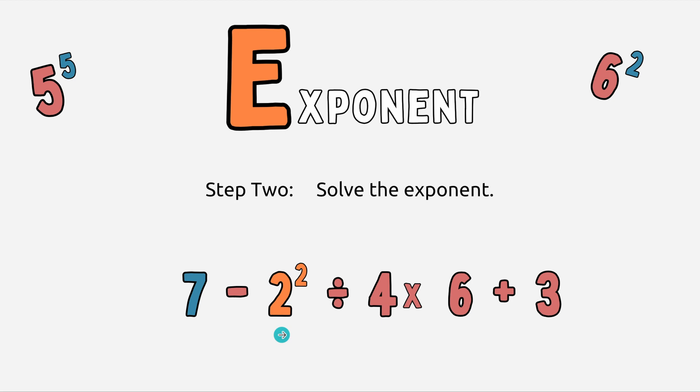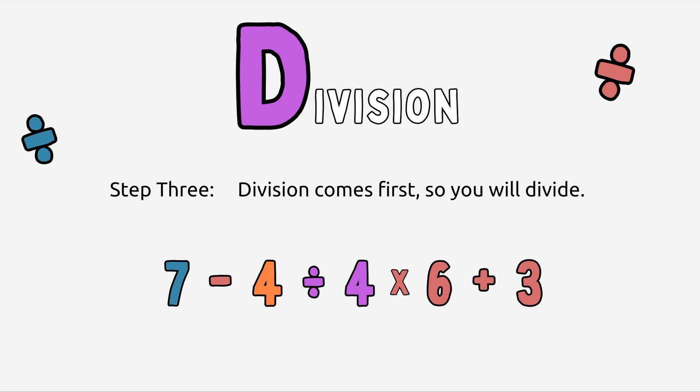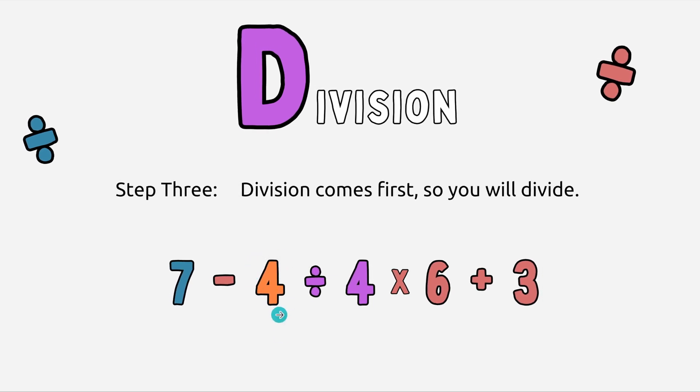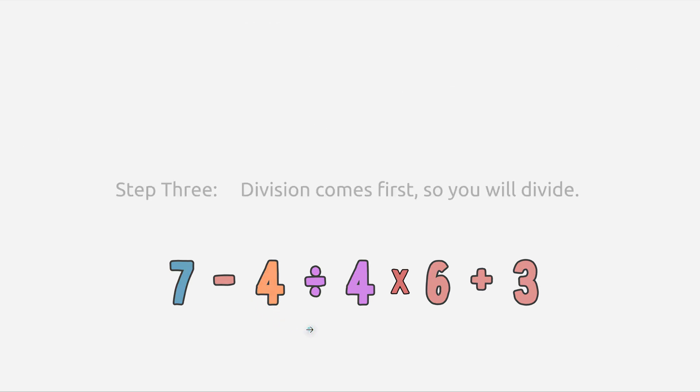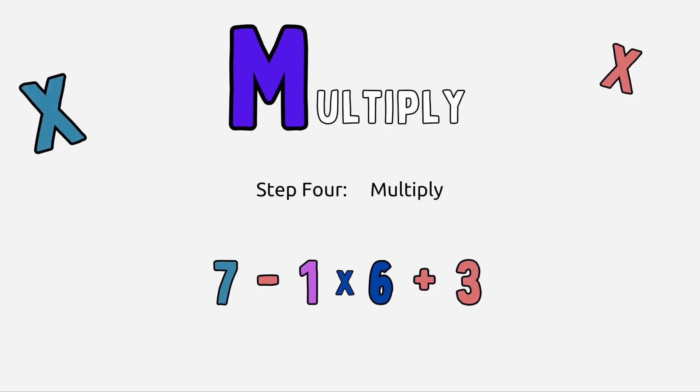So now I can move on to division. Now this has become a 4. Why, boys and girls, did I not do multiplication first? That's right, because division is coming first as we look from left to right in our expression. So now I need to divide. 4 divided by 4, what's 4 divided by 4 everyone? The answer is 1.